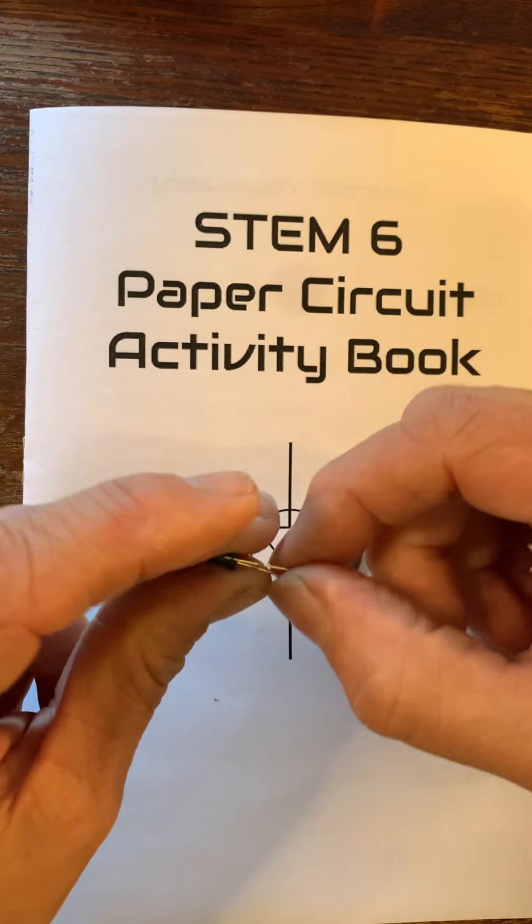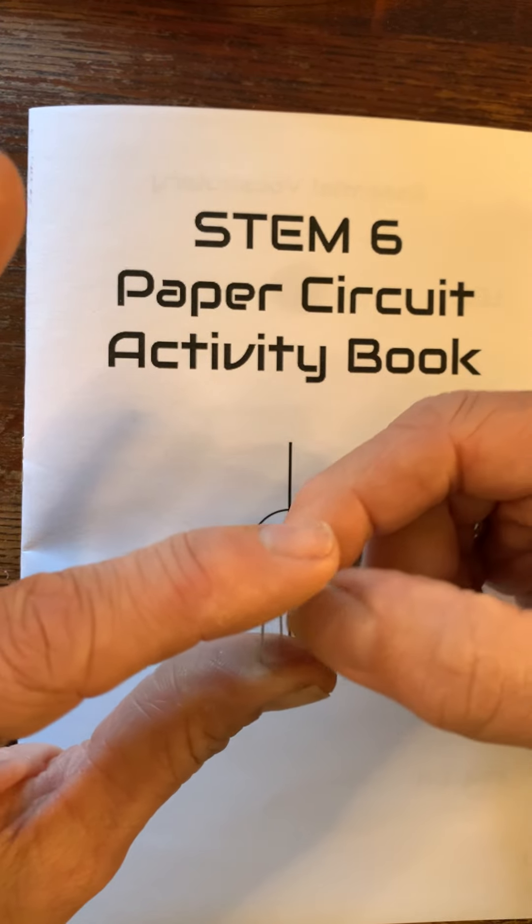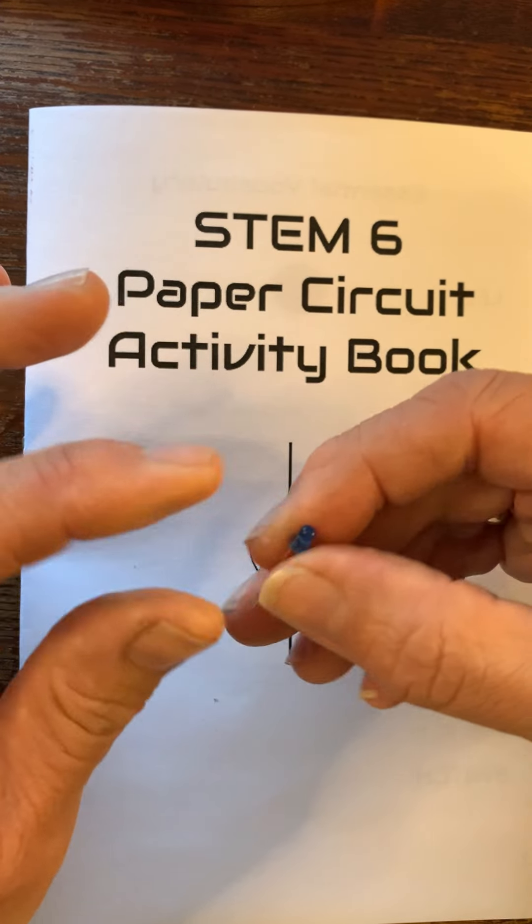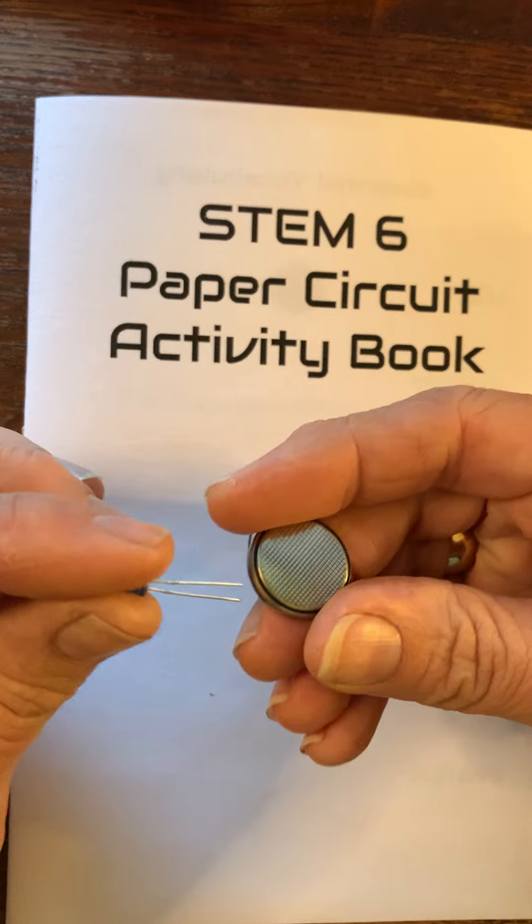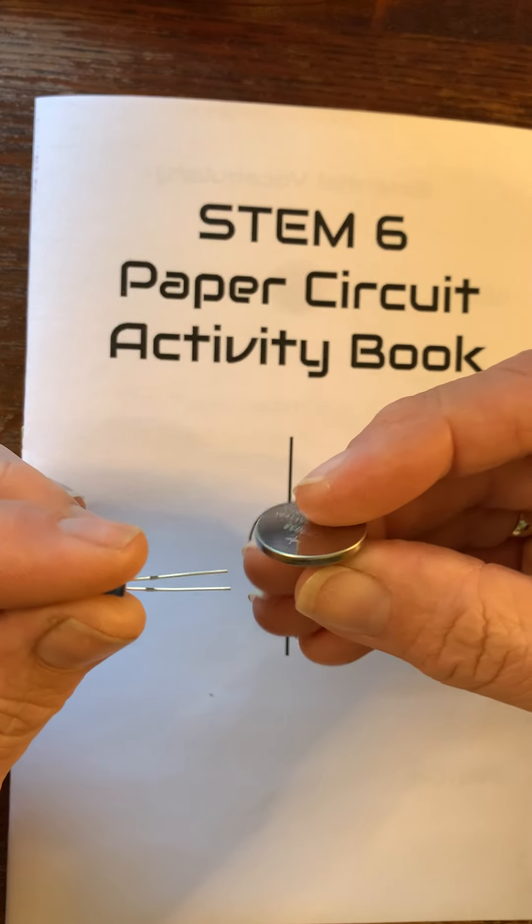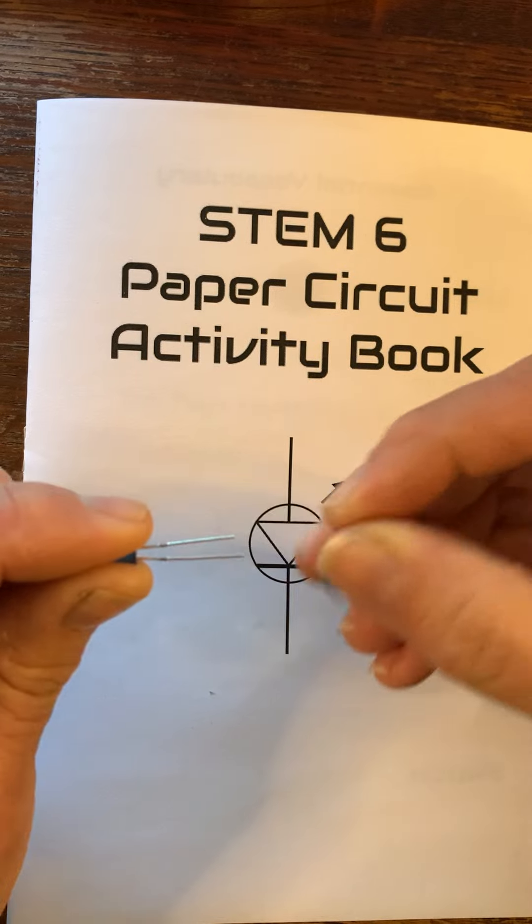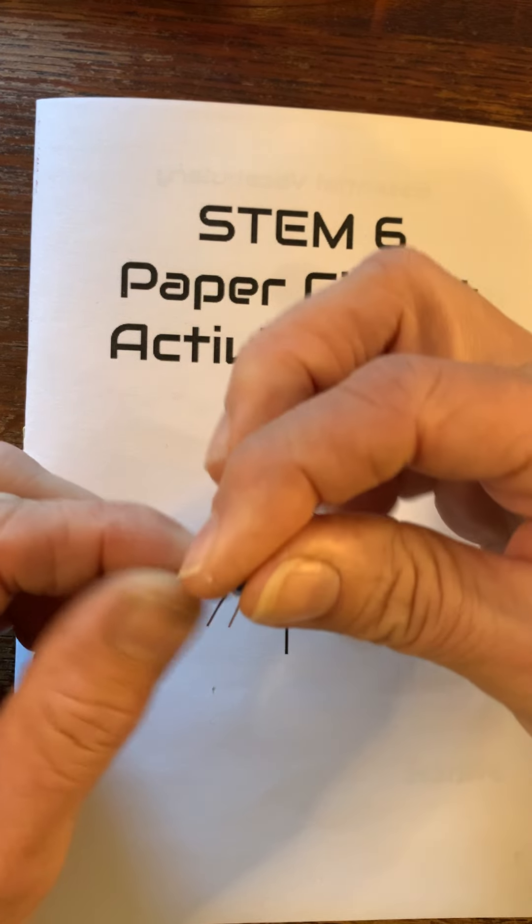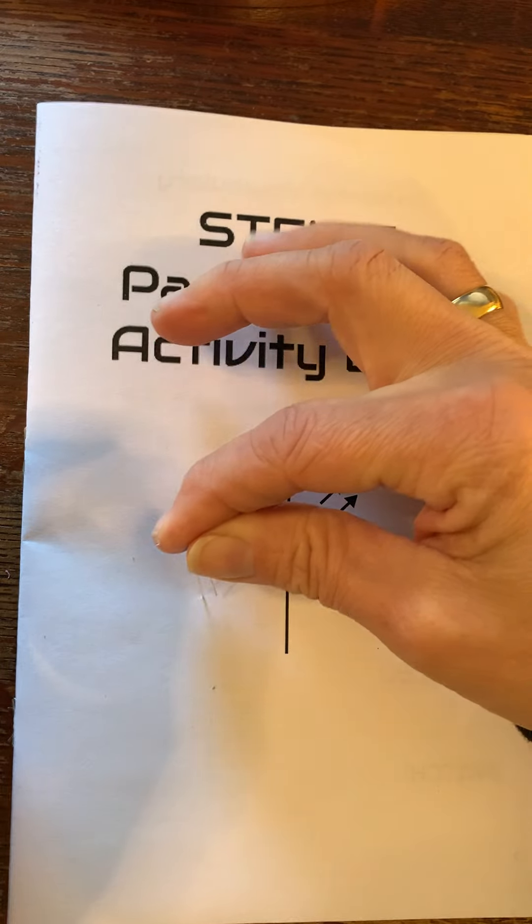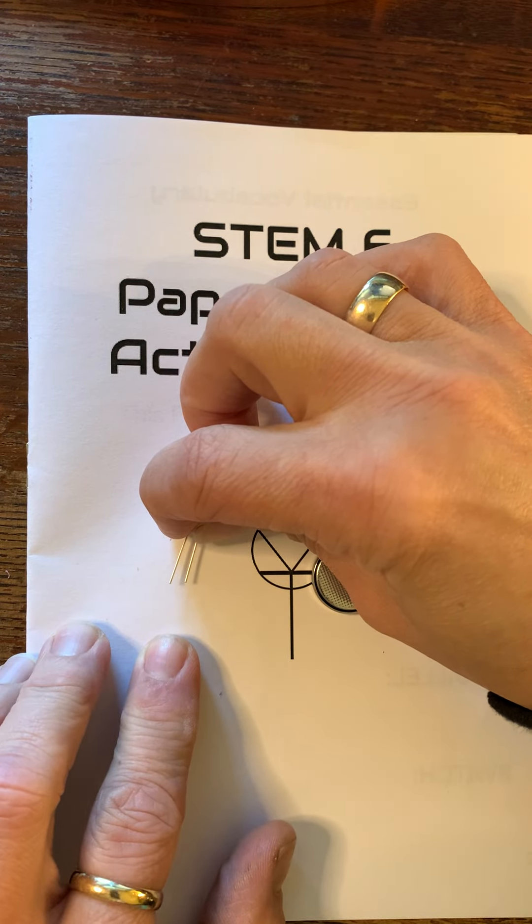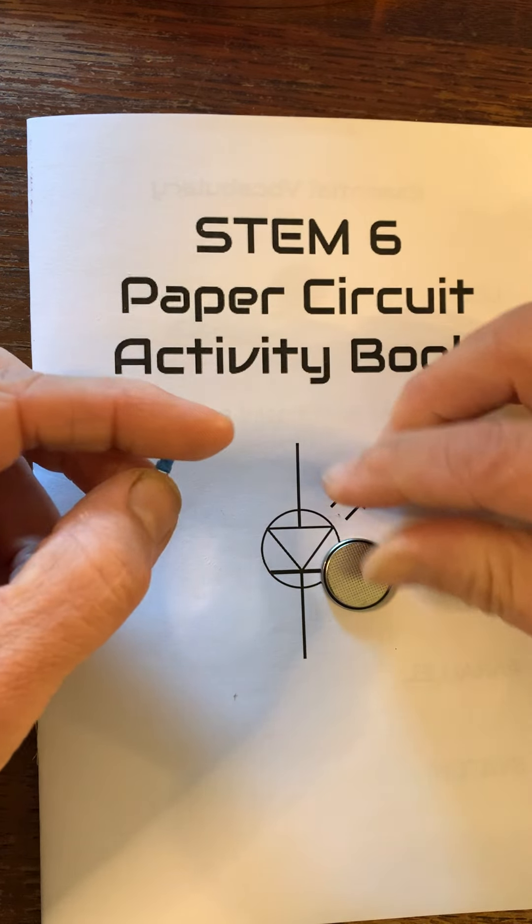Now these LEDs are made very specifically in that electricity can only go in one direction through the light. That's why when I turn the battery upside down no light flowed through. And when they make the LEDs they make them with one leg, you can see that on there, that is actually longer than the other leg and that's always the positive leg.